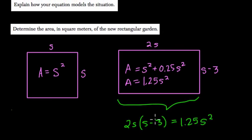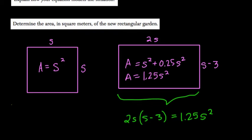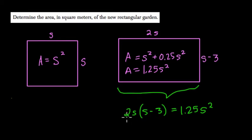And they asked us to explain how this equation modeled the situation. We could then say in words that 2S represents the side that's been doubled in length. S minus 3 represents the side that's been decreased by 3. And 1.25 times S squared represents the enlarged area of the garden. And S represents the side length of the original square garden.